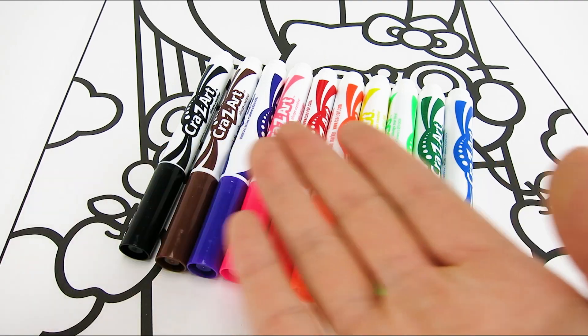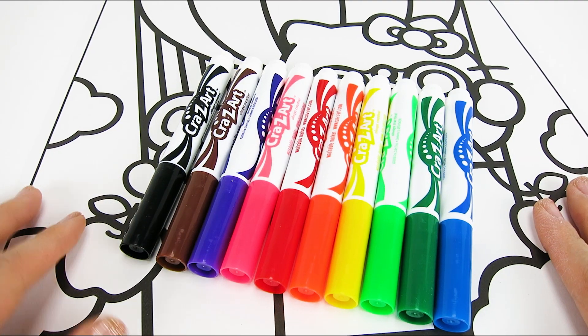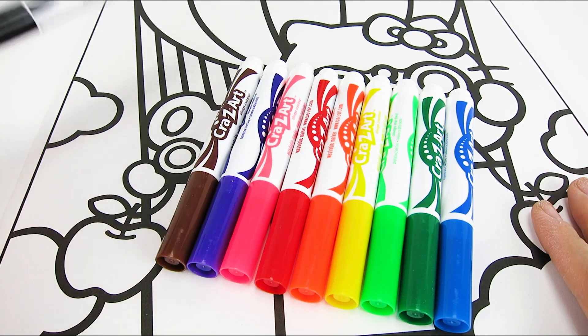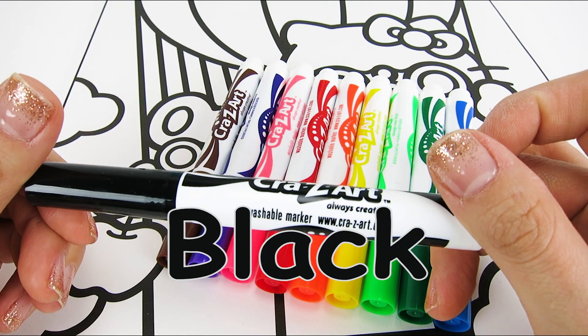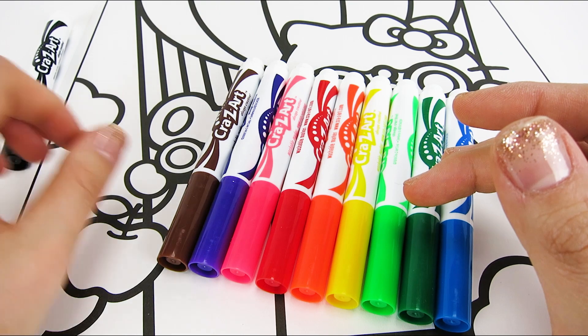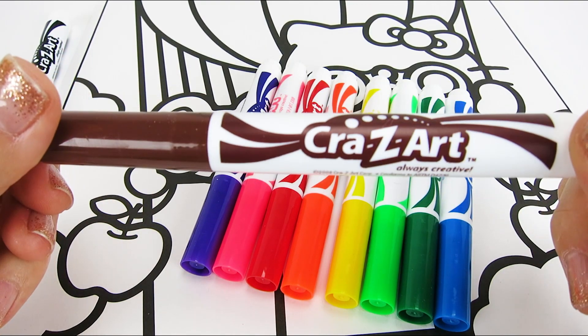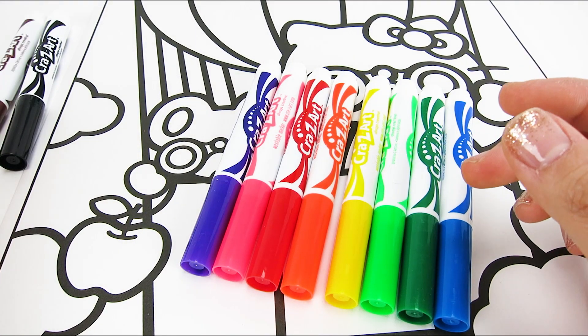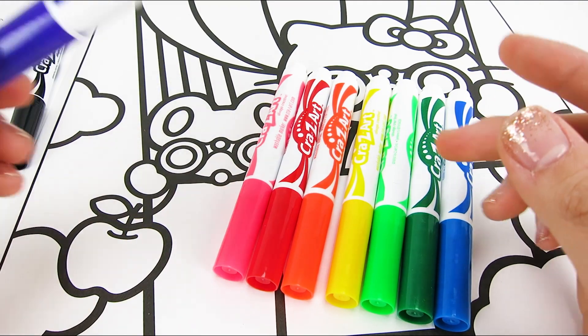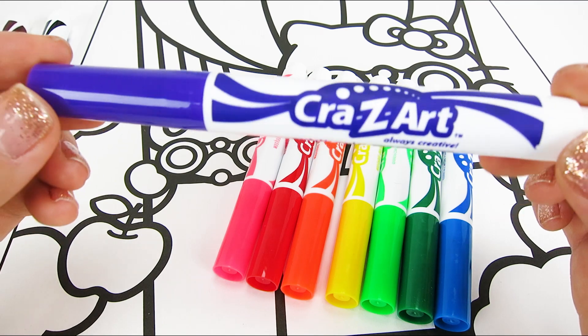Before we get started, let's name all the colors of the markers that we have to use. Do you know the name of this first color? It's black. We'll definitely get some use out of that color. Maybe you know the name of this next one. It's brown. What about this next one? Do you know the name of this color? It's purple.